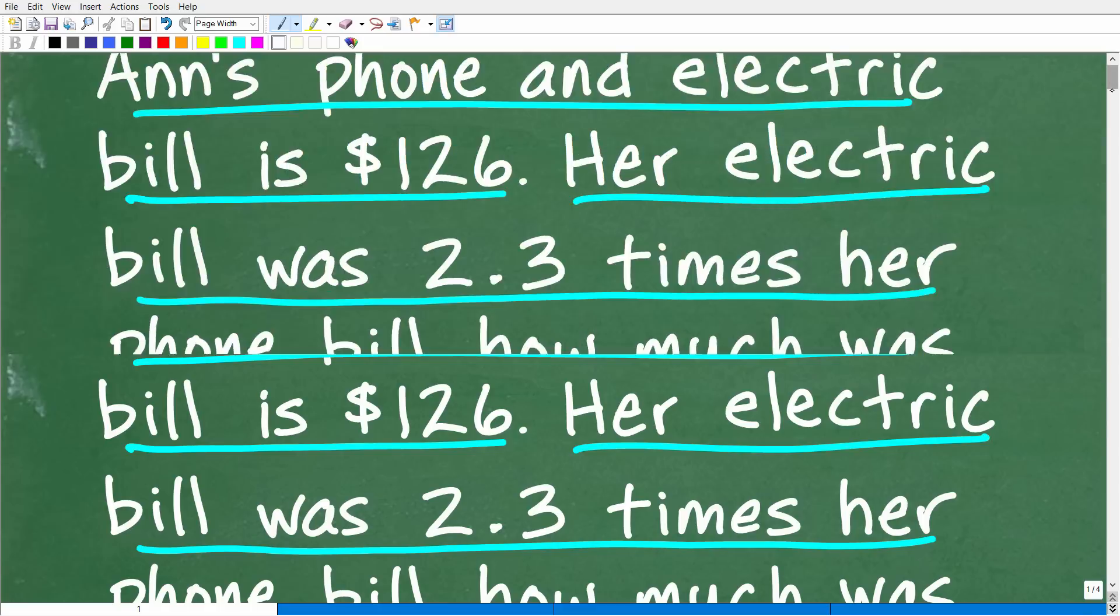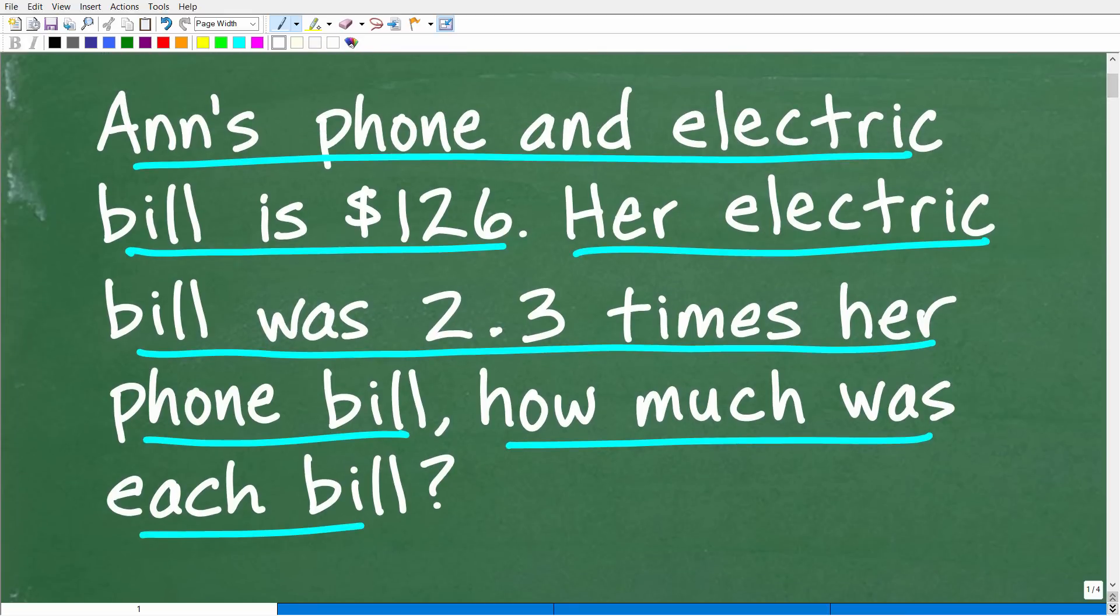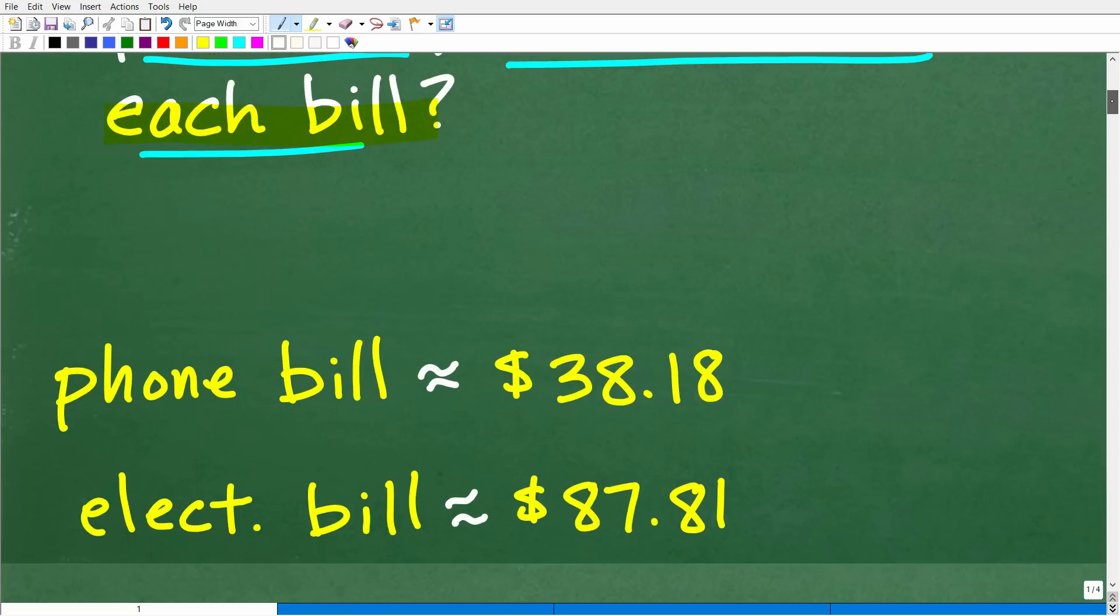Okay, so one more time before I show you the answer, Ann has her phone and electric bill. She opens it up, and it's $126. Now, that's the combined total amount for both of those bills. When she opened up those bills, she totaled them out. She's like, oh my goodness, I've got to pay $126 for my phone and electric. Her electric bill was 2.3 times her phone bill. How much was each individual bill? Okay, so let's go ahead and take a look at the answer.